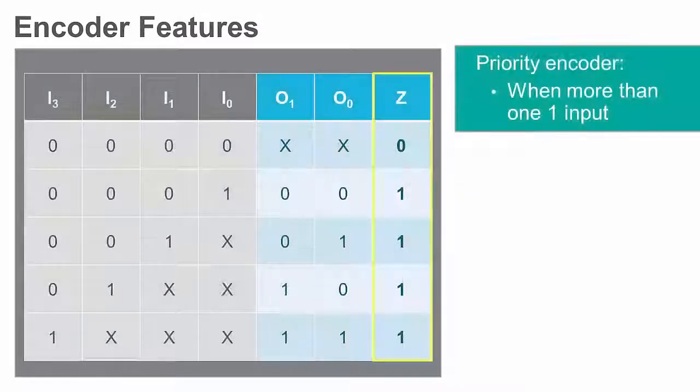In situations where it is possible for more than one of the inputs to be at a logic level 1, a priority encoder can be used. This type of encoder prioritizes the correct input at logic level 1.